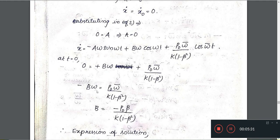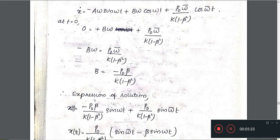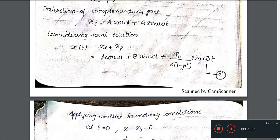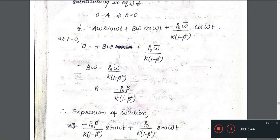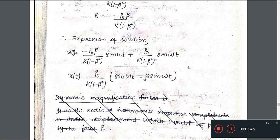We differentiate the total solution and substitute t equals 0 to find b. The first term and the last term vanish, and we solve for b. Substituting b back, we get p equals k times (1 minus beta_squared) times sin(omega_bar * t), where d equals p0 divided by k times (1 minus beta_squared).